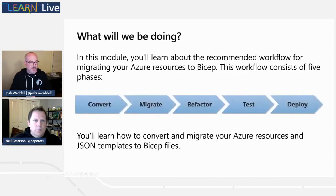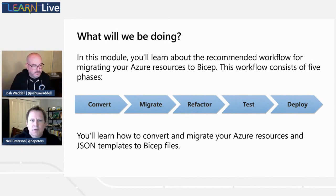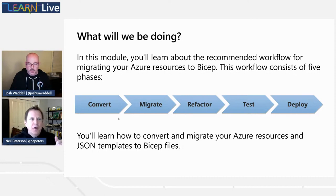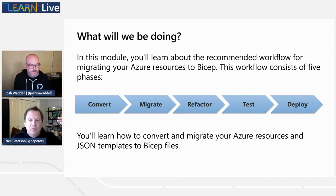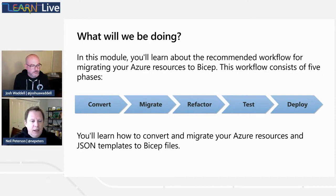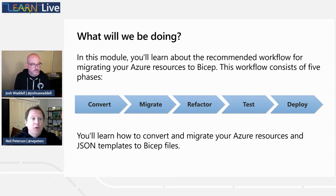So when we talk about the steps of what we're going to be doing today — at a high level, this is the workflow or framework we mentioned. We'll talk about converting either Azure resources that have already been deployed into Bicep, or maybe you already have the existing JSON template. More specifically, we'll talk about taking Azure resources that have already been deployed, pulling them down as JSON, and converting that to Bicep.